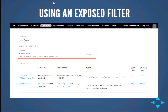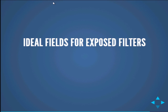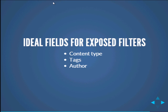From the preview pane below the display editor, you can see our tracker view with our author exposed filter field. We can enter in a user — it will autocomplete for us — click apply, and we get different results. Ideal fields for exposed filters: content type for broad tracker views, tags for slicing content up, and authors.